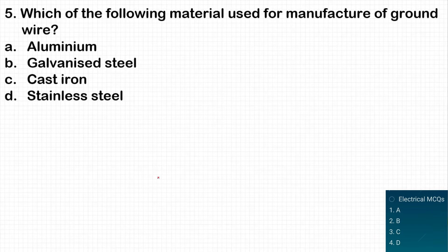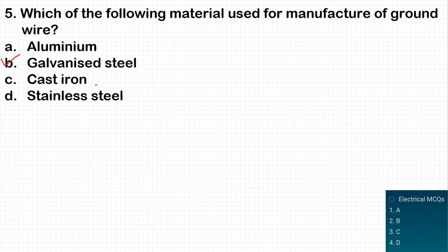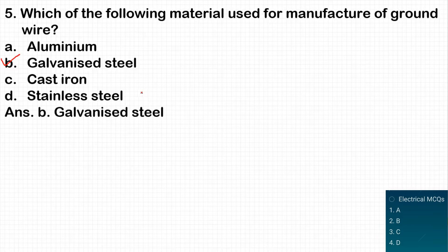The next question: which material is used for manufacturing the ground wire seen in transmission lines? The overhead ground wire is made up of galvanized steel. So option B is the correct answer.